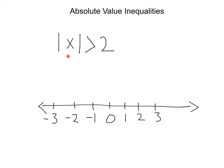Here we've got absolute value of x is greater than 2. Now you want to think about — remember, what does absolute value mean? It means distance from 0. So this absolute value of x — x is greater than 2 spaces from 0. So let's look at our number line down here. If I'm at 0, I know x is more than 2 spaces away.